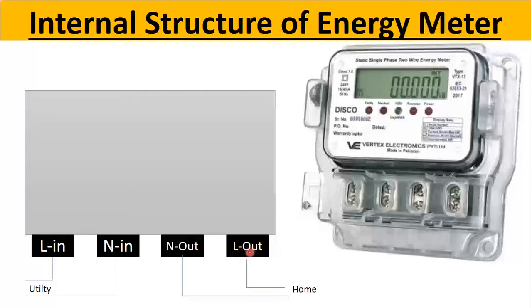Then we have neutral out and line out. Line out is synonymous to phase. This is phase conductor. So it is going to our home or apartment or building.